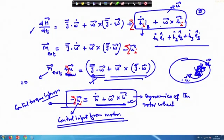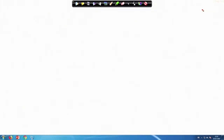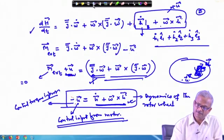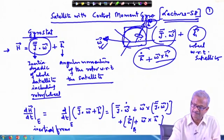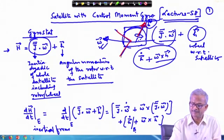For multiple rotors along different axes, just put a summation and use that to solve the problem. Now we move to the control moment gyro. How does it differ? In the case of the gyrostate, the rotor's direction was fixed with respect to the body axis — it remains fixed inside the body frame.